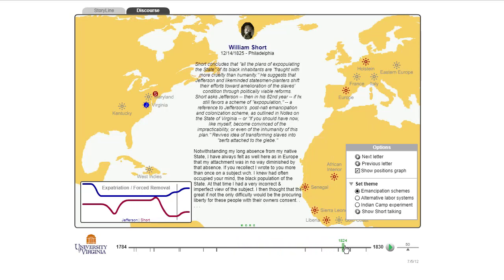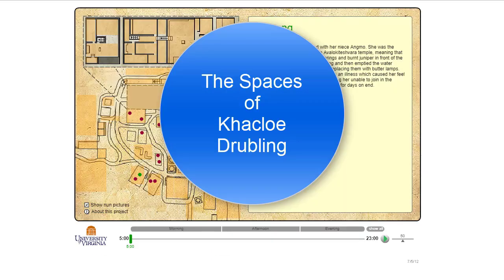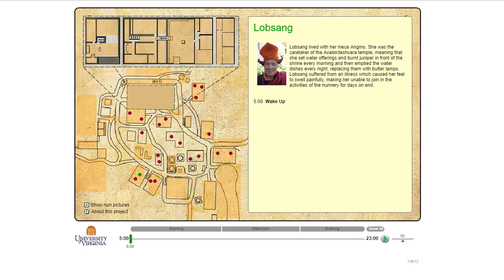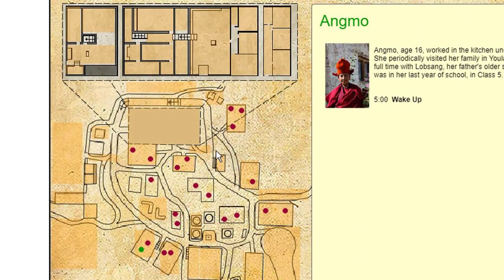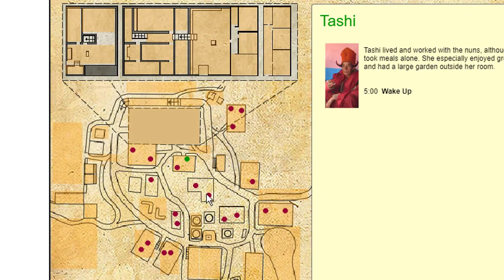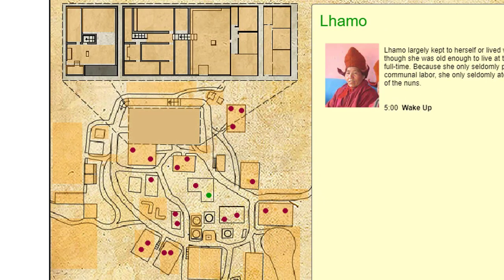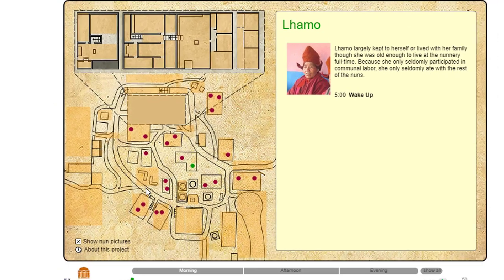Both of them obviously drifted apart after that. This visualization was done by a then-undergraduate student at UVA, Kay Hartman, who had spent a summer in India at a nunnery for exiled Tibetan nuns and tracked what they did all day. Each one of these dots represents a particular person — that's Lapsang, Angmo — and what they did at any given time. Let's concentrate on the morning and follow Lapsang along.